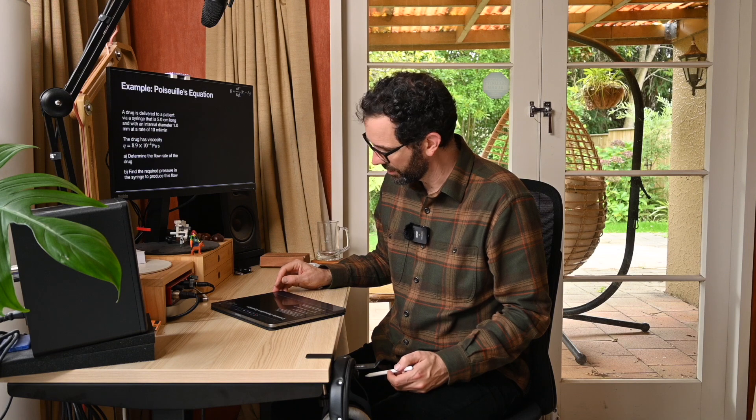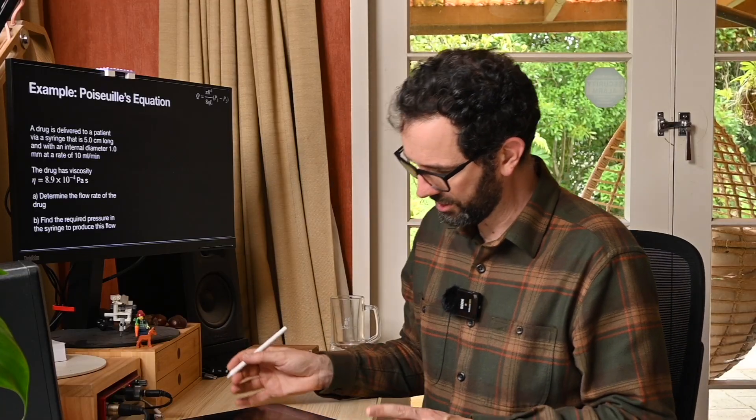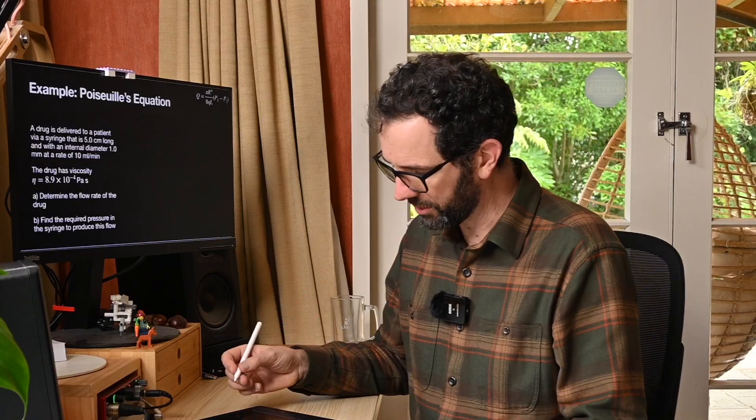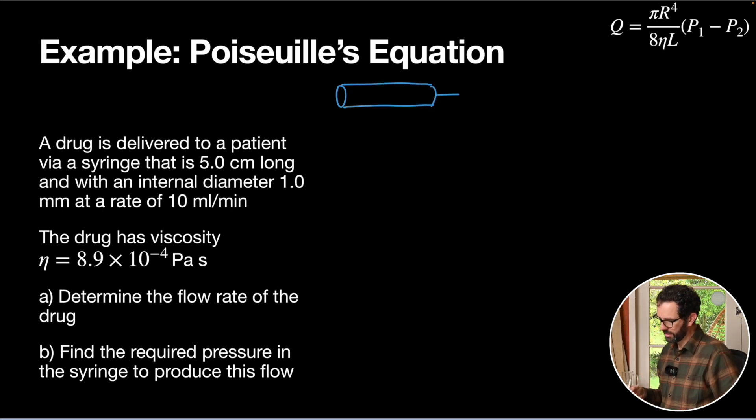This is definitely best illustrated with an example, so we'll jump straight into one. A drug is delivered to a patient via a syringe that is five centimeters long, with an internal diameter one millimeter, at a rate of 10 mils per minute. So we've got a little bit going on with this question. Maybe the first thing we'll do is draw a diagram. We've got a five centimeter long syringe.